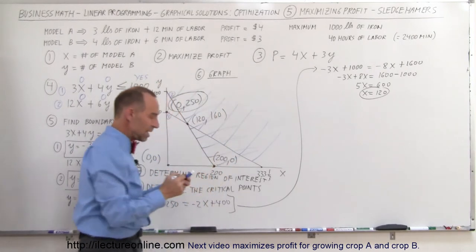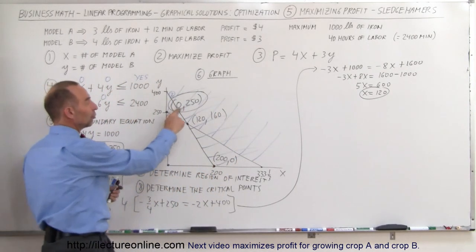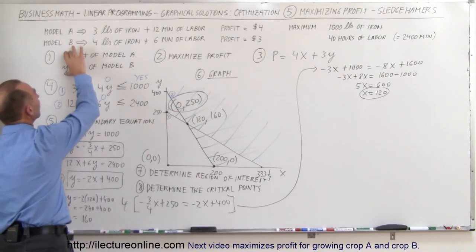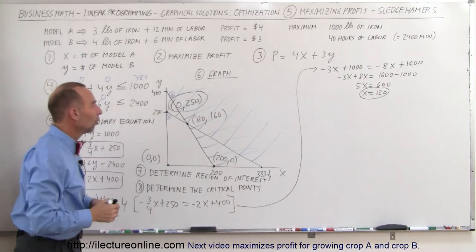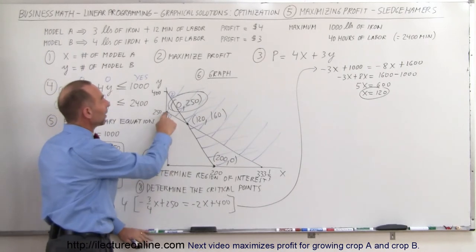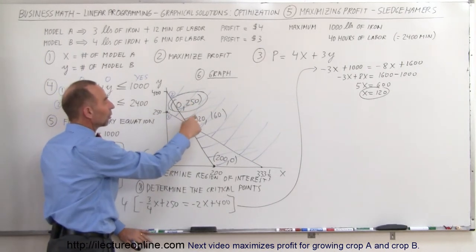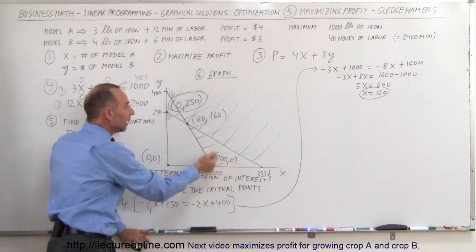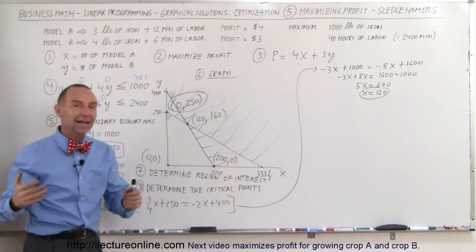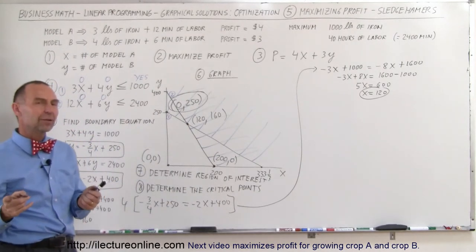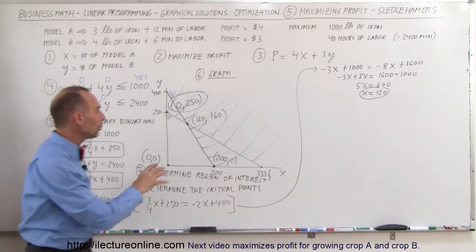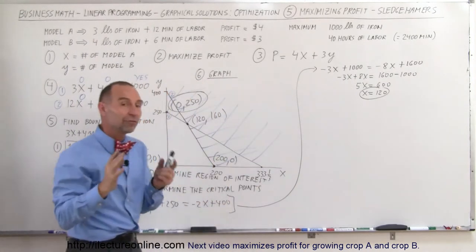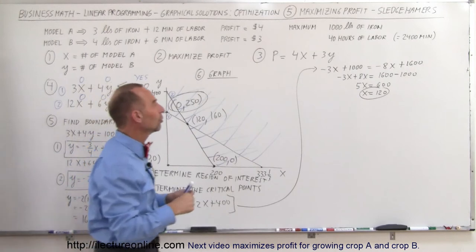Now what do these numbers mean? Remember that the first value is X and the second is Y, representing the number of each model to be produced. So either we produce 0 of X and 250 of Y, or 120 of X and 160 of Y, or 200 of X and 0 of Y — one of those will give us the highest profit. We take those points and plug them back into the objective function.